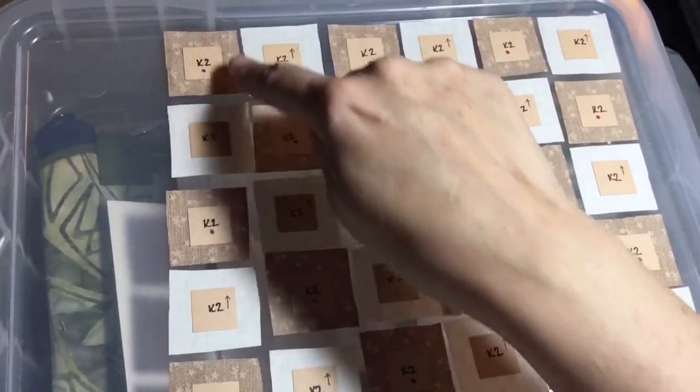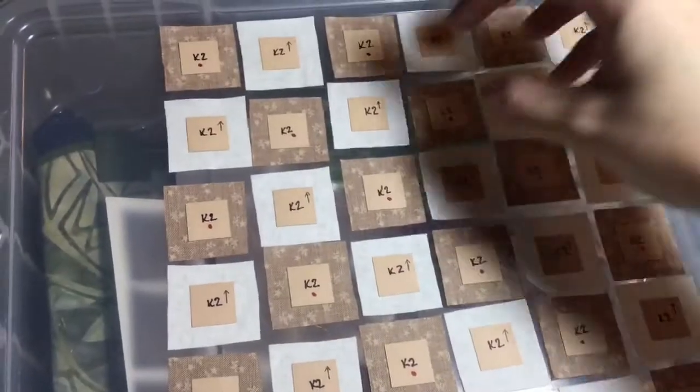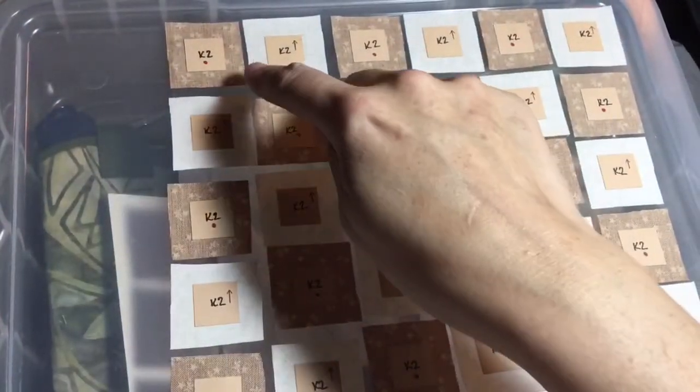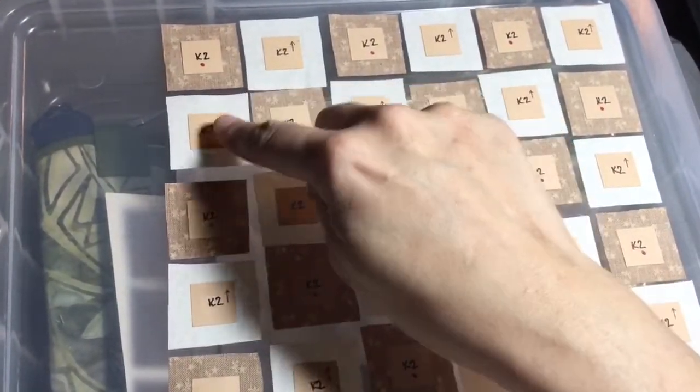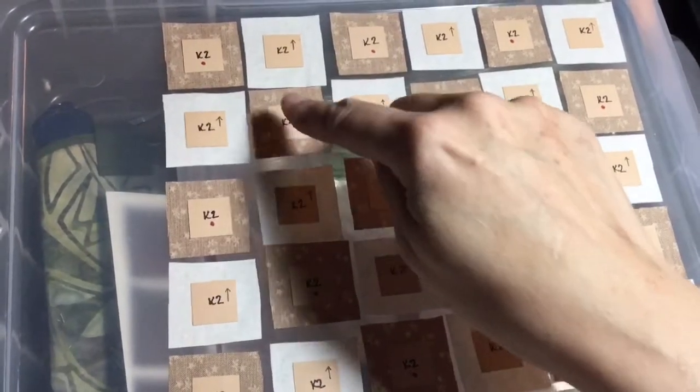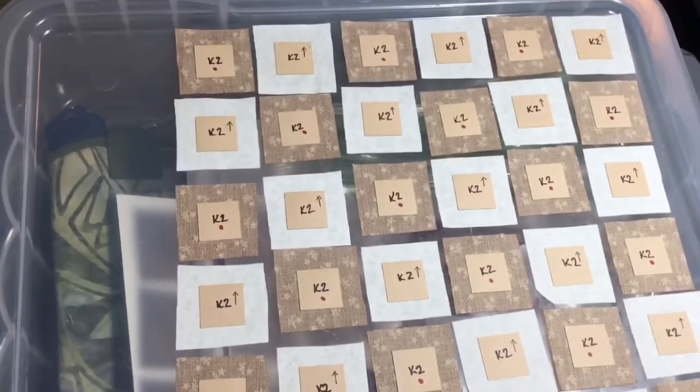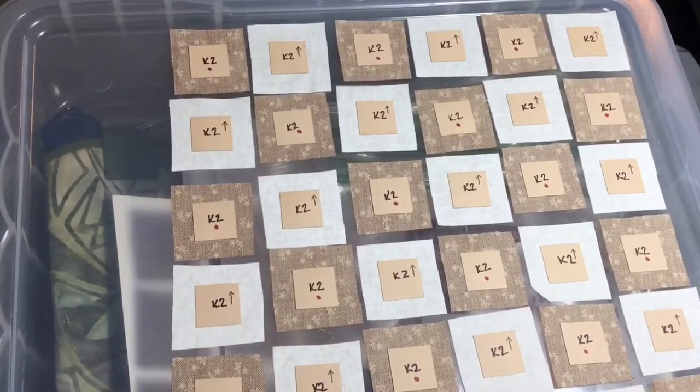The critical part of this is going to be to make sure that as I connect the rows, the squares stay lining up correctly so that the intersection of the seams come together correctly. So it's just a matter of basting and assembling row by row.